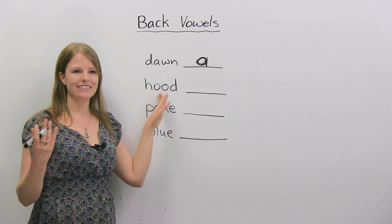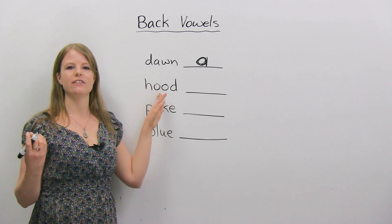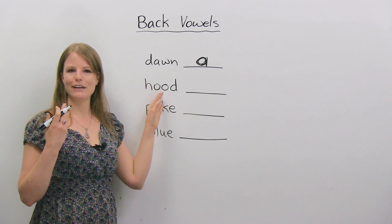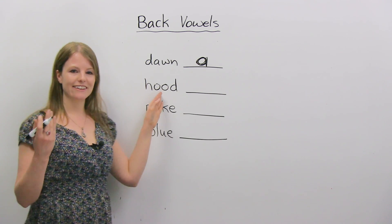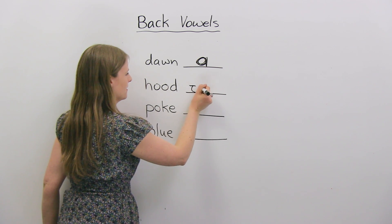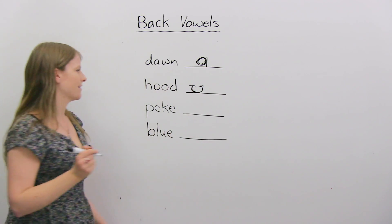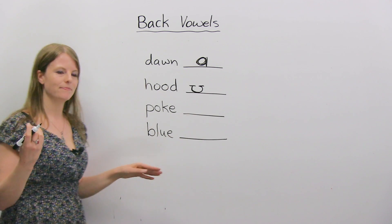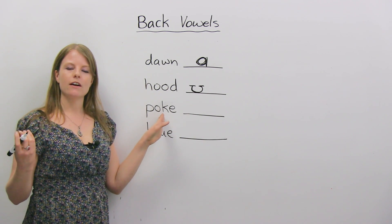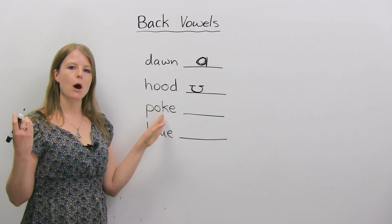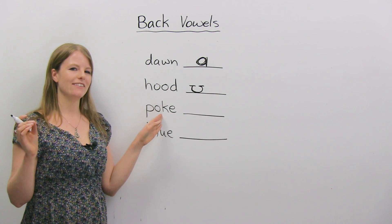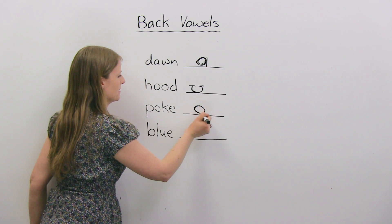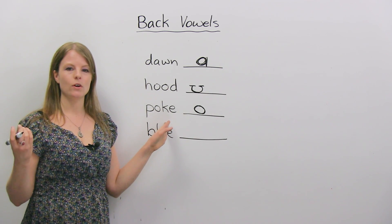The next sound — "hood", "uh", "hood". It's a short sound, and my mouth isn't really open that much. So this is actually the "uh" sound — hood. Now, what about "poke", "oh", "poke"? Do you hear the "oh" sound there? Poke — this is the "oh" sound we learned today.